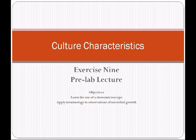In exercise 9, you're going to be using a stereomicroscope. A stereomicroscope is different than a compound microscope, and sometimes it's called a dissecting microscope. You're going to apply terminology to observations of microbial growth on your environmental plate that you saved from the previous lab.